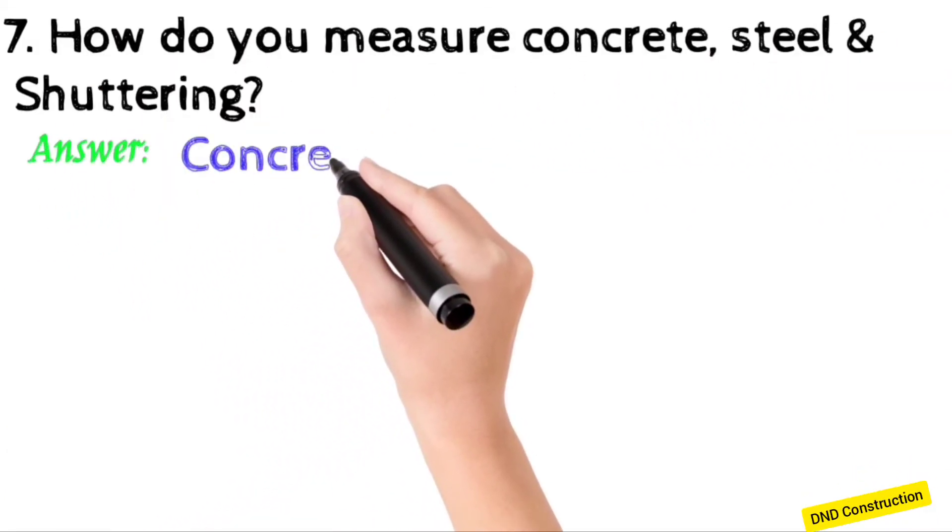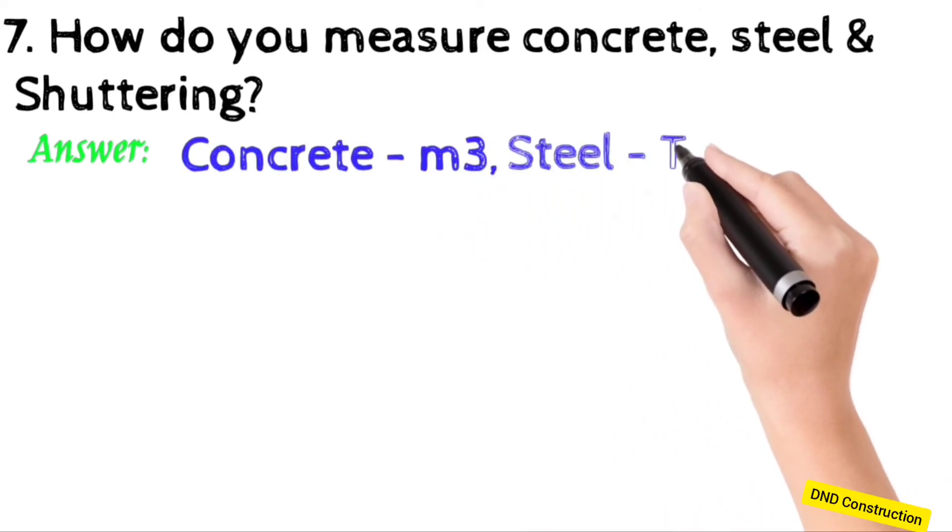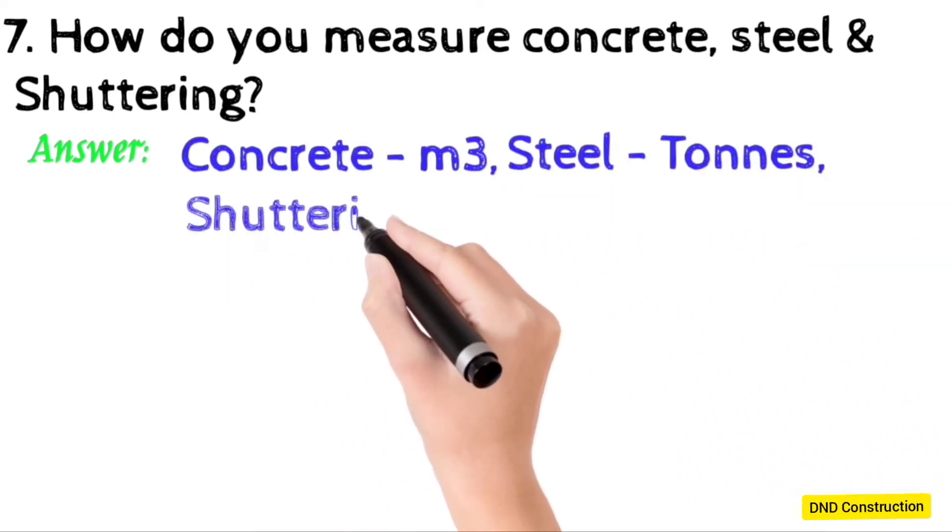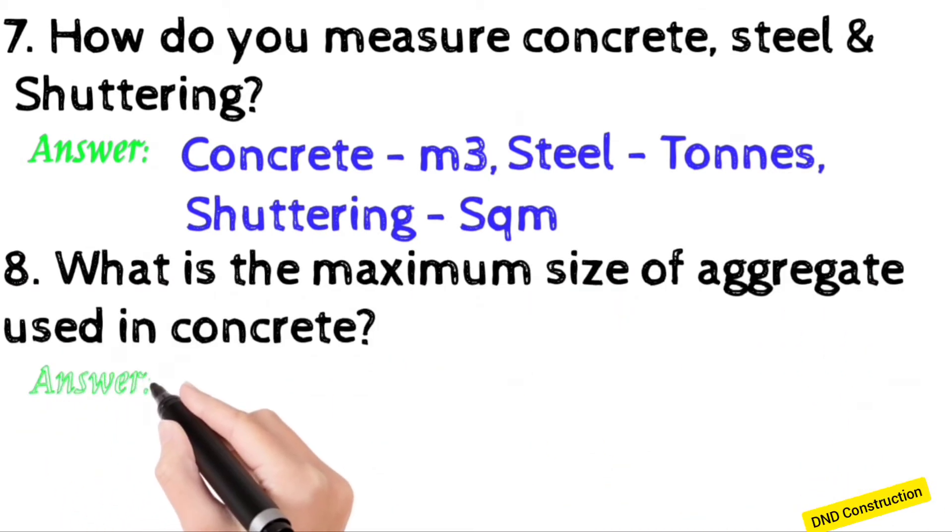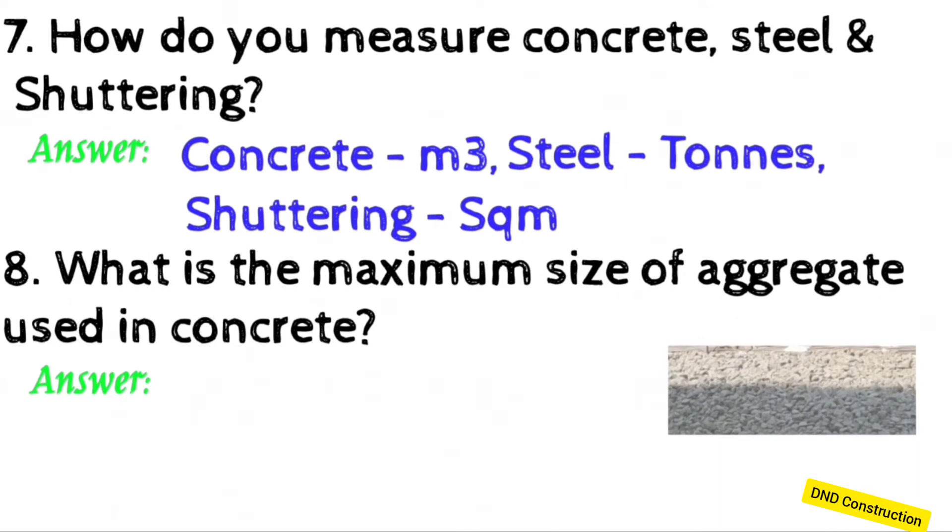Concrete in m³, steel in tons or kg, and shuttering in square meter. What is the maximum size of aggregate used in concrete? Answer: 20mm.